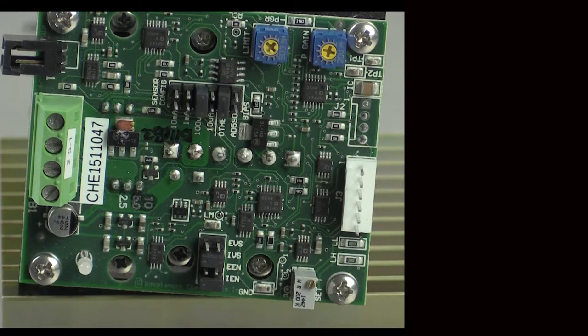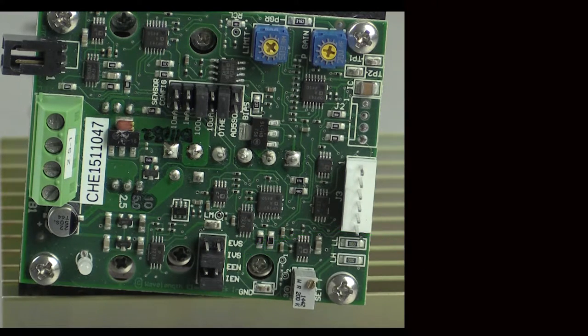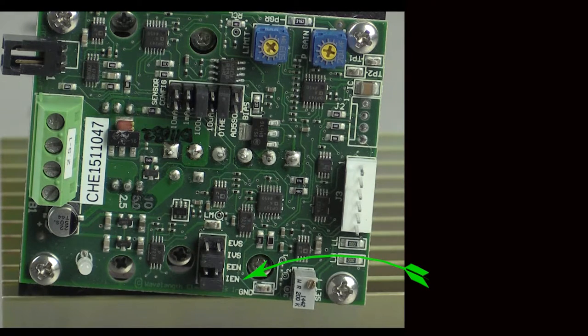We want to use the onboard setpoint trim pot, so make sure the setpoint jumper is on IVS, internal voltage setpoint. We'll also choose to have the output always enabled, so the enable jumper needs to be set to IEN, internal enable.